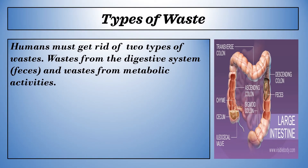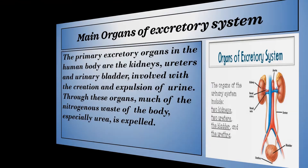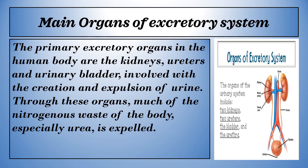Humans must get rid of two types of wastes: waste from the digestive system, which is feces, and waste from metabolic activities. The primary excretory organs in the human body are the kidneys, ureters, and urinary bladder, involved with the creation and expulsion of urine. Through these organs, much of the nitrogenous waste of the body, especially urea, is expelled.